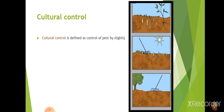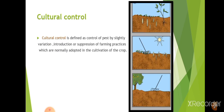Cultural control is defined as the control of pests by slight variation, introduction, or suppression of farming practices that are normally adopted in crop cultivation. It includes plowing or cultivation of soil: insect pupae or larvae hidden in the soil are exposed to sunlight during plowing and get killed, effectively controlling the insect population.